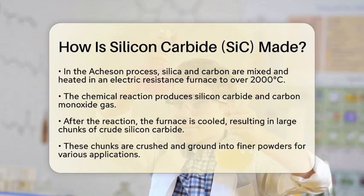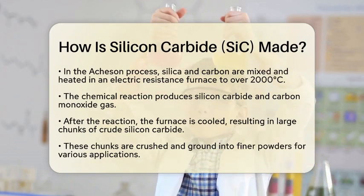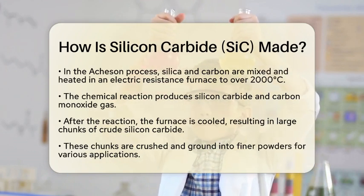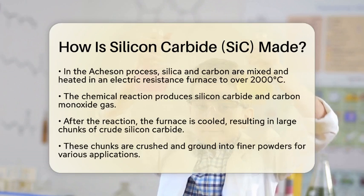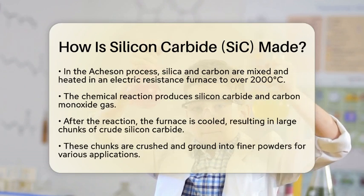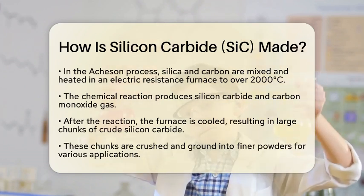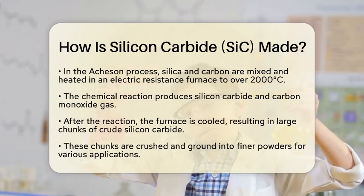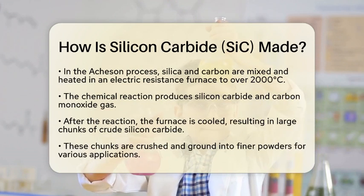Once the reaction is complete, the furnace is cooled down. The result is large, hard chunks of material called crude silicon carbide. These chunks are then crushed and ground into finer powders.